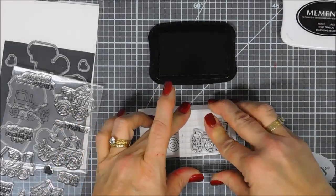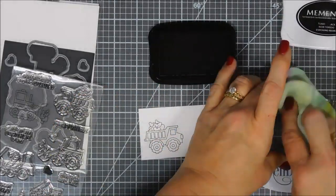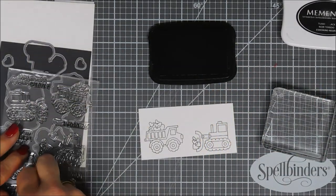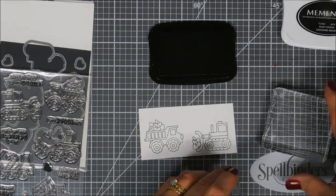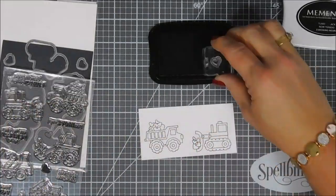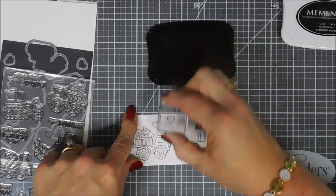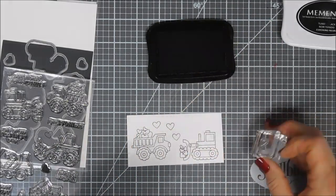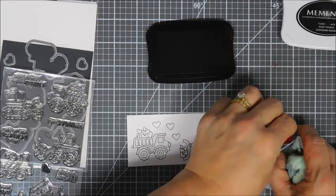I stamped two of the trucks that were facing each other, and then I'm also going to stamp the outline of the heart three times and also the safety cone three times. We're going to build a little scene. Today's project is going to be pretty simple. I'm stamping on Copic-friendly paper and I'm stamping with Copic-friendly ink.